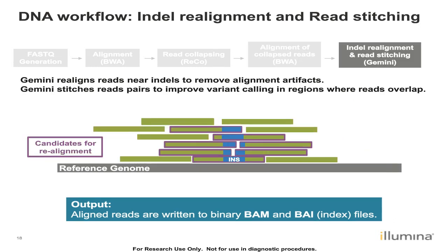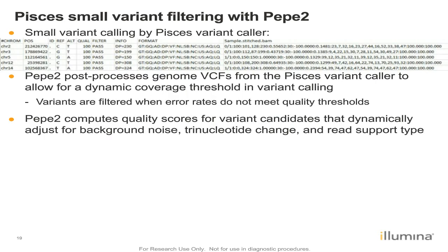The final alignment step is indel realignment and read stitching through a software component called Gemini. This is realignment near indels specifically, to look for the best alignment near indels and remove any alignment artifacts from BWA. After that realignment, reads that overlap are stitched together to get the best quality base calls from those overlapping regions. We then do an initial variant calling from our variant caller Pisces, an Illumina variant caller used in various pipelines. That outputs a standard VCF file with chromosome, position, variant call, and various information about the call. But that's not the final step.